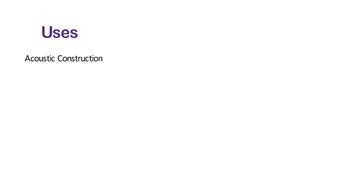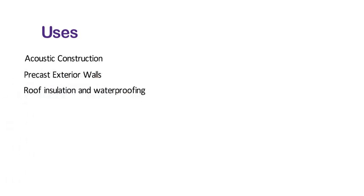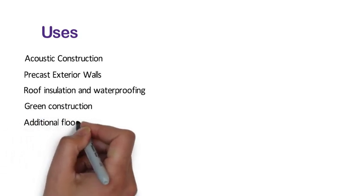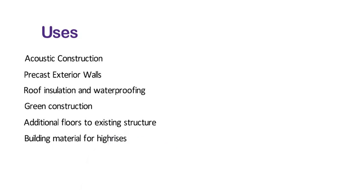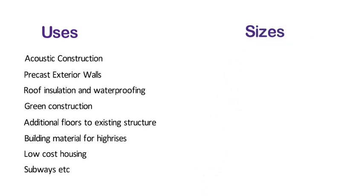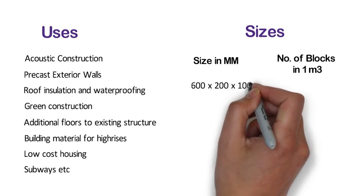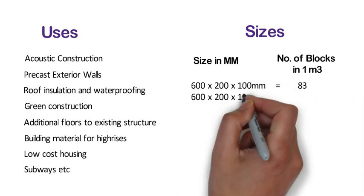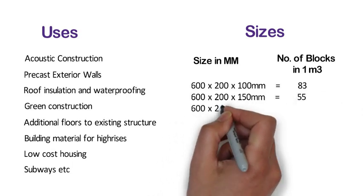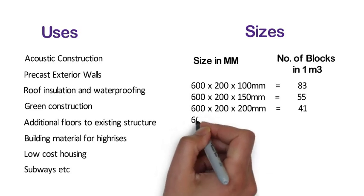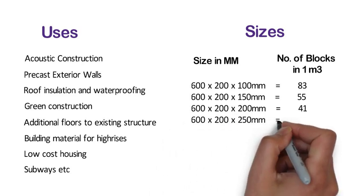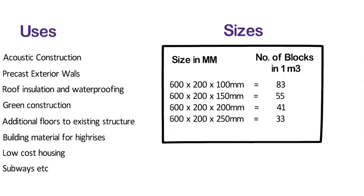CLC blocks can be used in acoustic construction, precast exterior walls, roof insulation and waterproofing, green construction, additional floors to existing structures, building material for high rises, low cost housing, subways, etc. The sizes available in CLC blocks are: 600x200x100mm — 83 blocks per m3; 600x200x150mm — 55 blocks per m3; 600x200x200mm — 41 blocks per m3; 600x200x250mm — 33 blocks per m3.